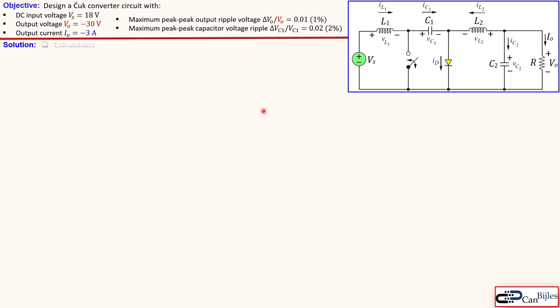Okay, let's see what we need to do in our calculations. First we need to determine the duty cycle, that is our step one. Looking at the formulas for our Cuk converter we can use this formula which is actually exactly the same as the buck-boost converter formula. We know that we have minus 30, so you take the absolute value divided by the source voltage plus the absolute value of the output voltage. You get here 0.625 or 62.5% as the duty cycle.